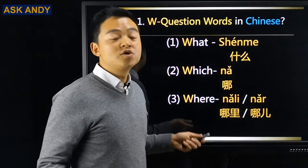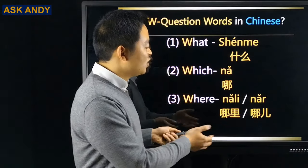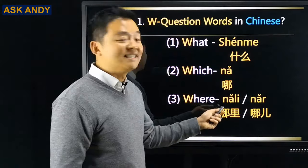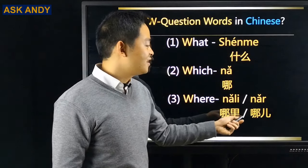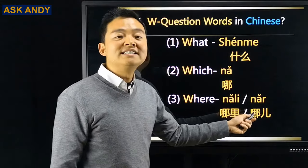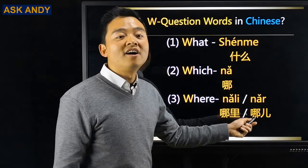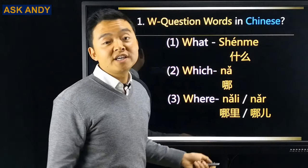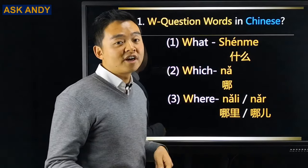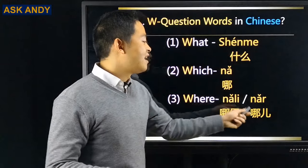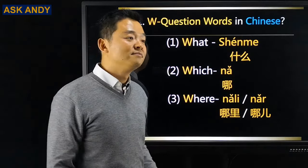Number three: where. For where, I have two versions. One is 哪里 (nǎlǐ), the other is 哪儿 (nǎr). 哪里 is heard in the southern part of China, while 哪儿 is heard in the northern part.